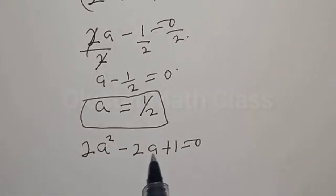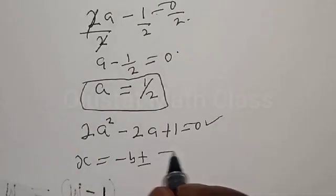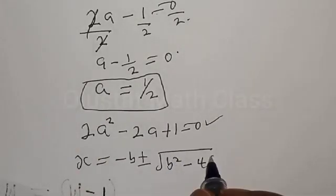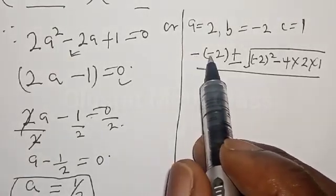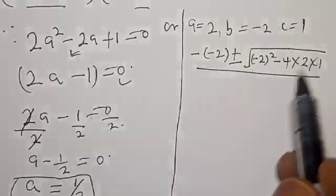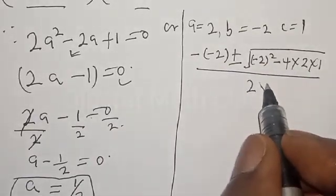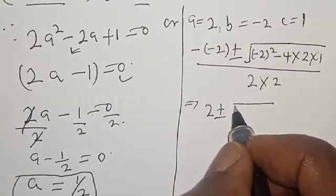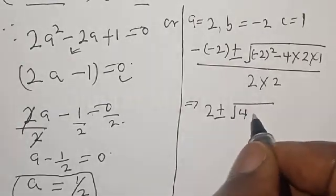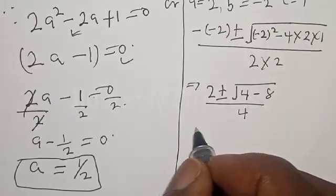Also from 2a² - 2a + 1 = 0, this is a quadratic equation. Let's solve it using the quadratic formula: a = (-b ± √(b² - 4ac)) / 2a. Here b = -2, a = 2, c = 1. So we get: a = (2 ± √((-2)² - 4×2×1)) / (2×2), which is a = (2 ± √(4 - 8)) / 4.